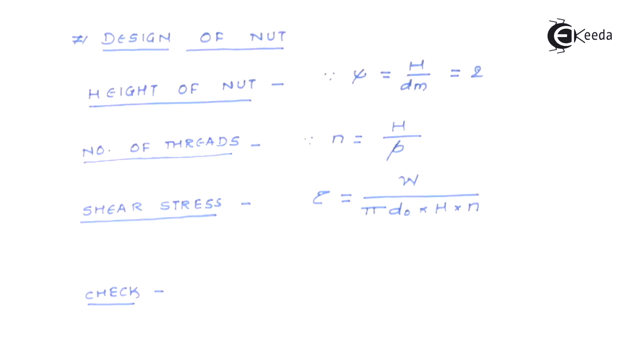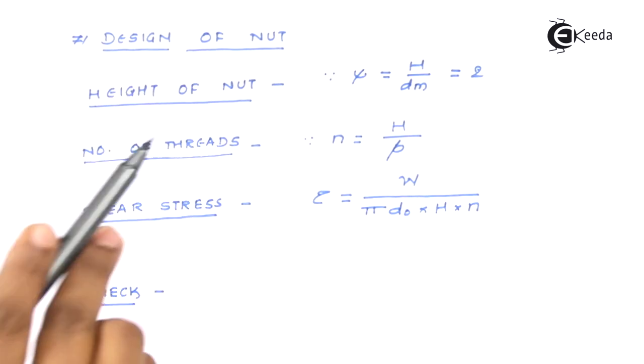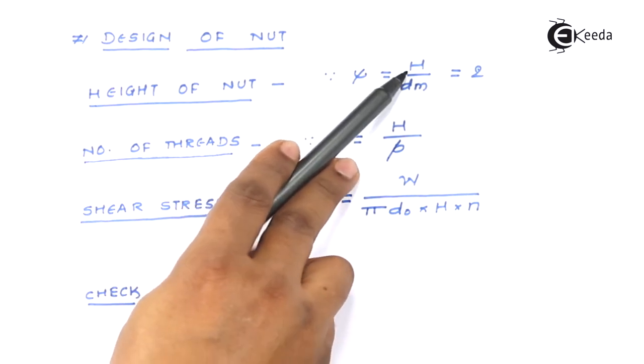The screw is safe in buckling and here we finish with the safety aspect of power screw where in all the aspect the screw is safe. Let's go for the determination of remaining parameters, let's go for the design of nut.